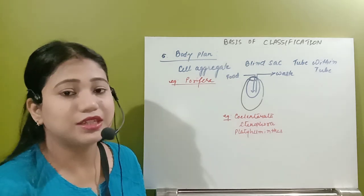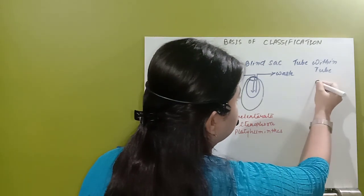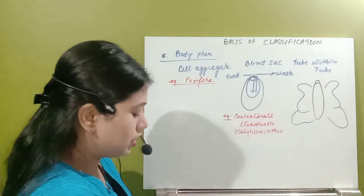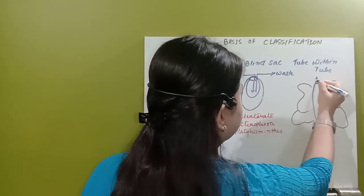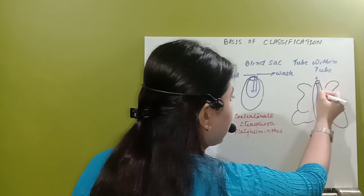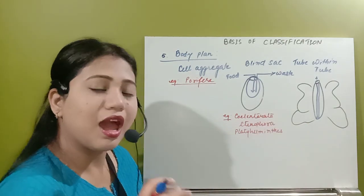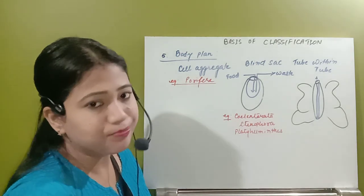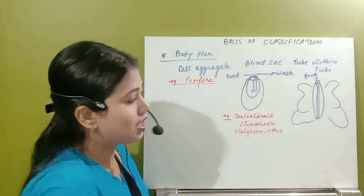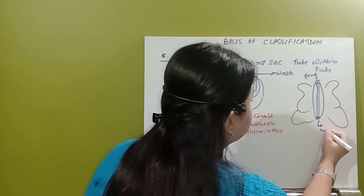Now come to the next and last type of body plan, that is the tube within tube body plan. Just see what is happening to this organism. Take the example of a butterfly. With the mouth they will ingest the food. Then they will have a canal that is the digestive canal, or we can call it the GI tract or the alimentary canal. With the help of the mouth they will always ingest the food, and with the anus they will remove the waste product.